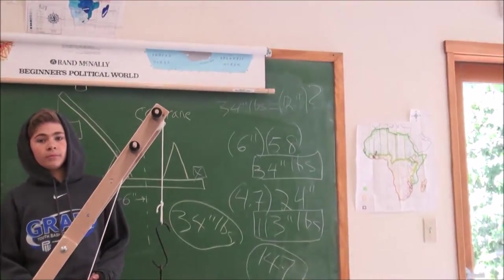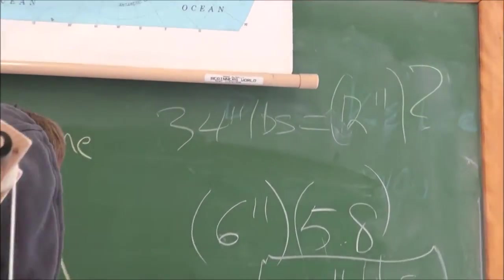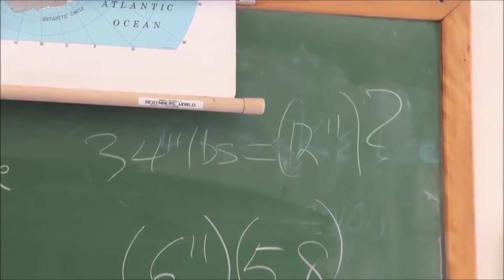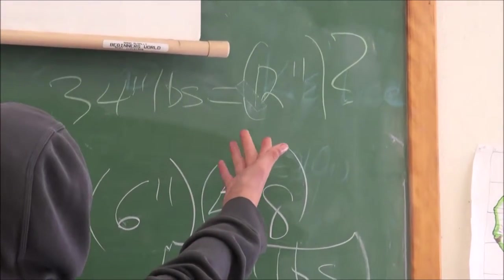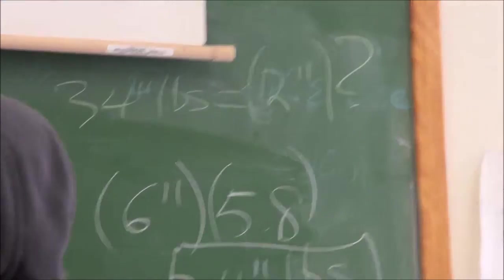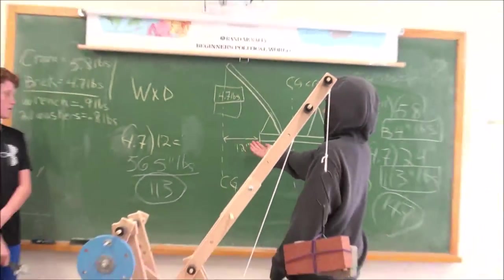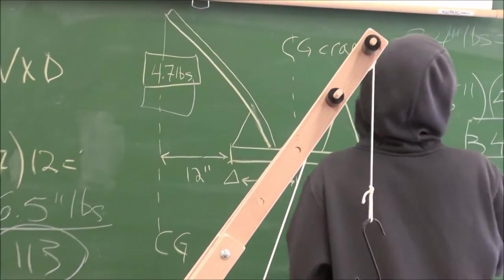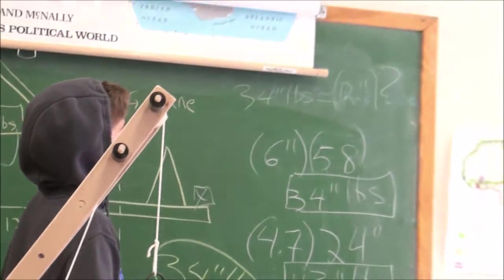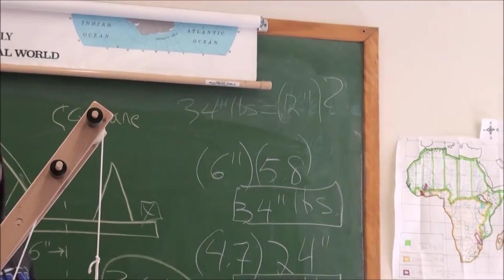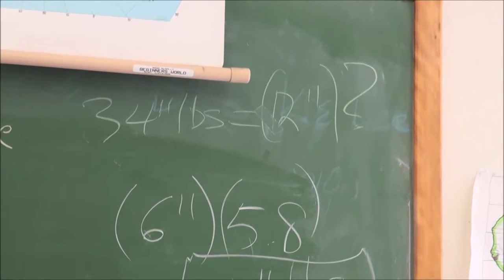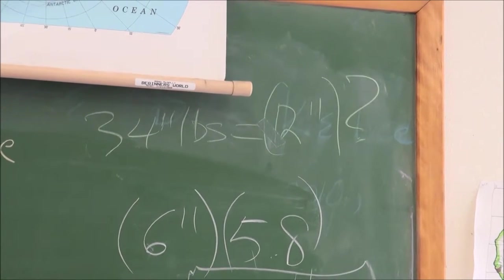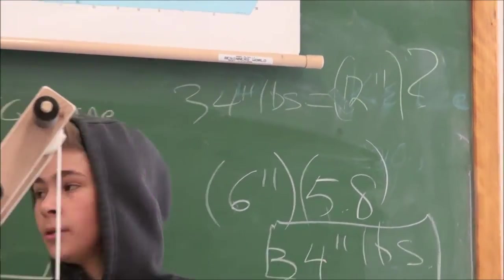To get 34 inch pounds, it's weight times distance. We know the distance is 12 inches because the distance between the pivot points hasn't changed. So we need to think of what times 12 is going to get us 34, and that's roughly 2.5. In this case, 2.5 pounds times 12 inches equals 34 inch pounds.